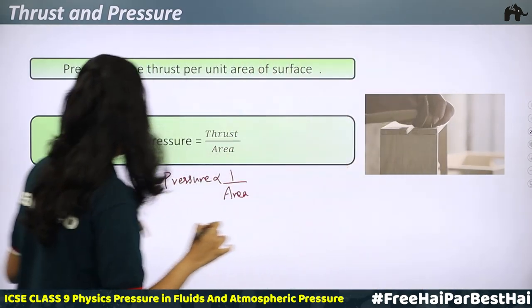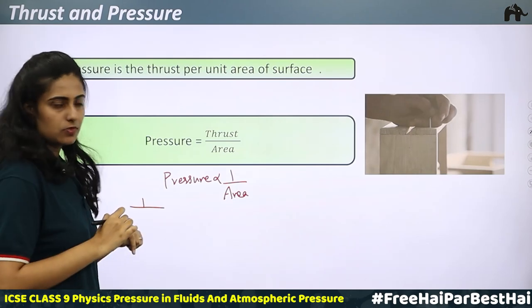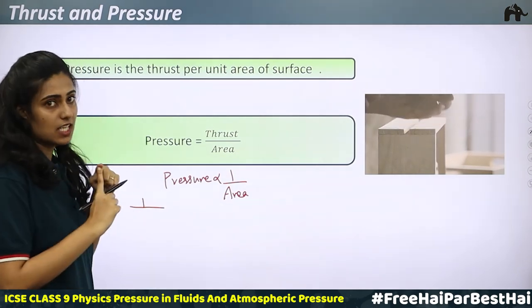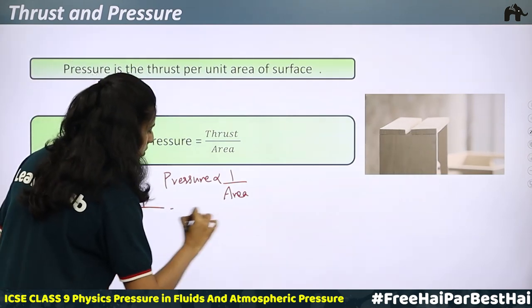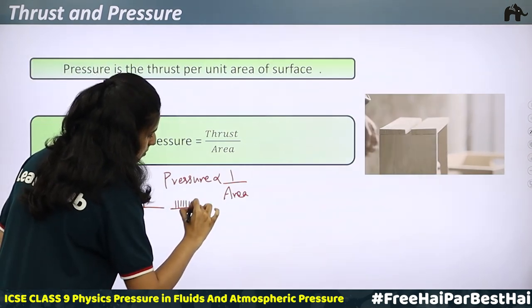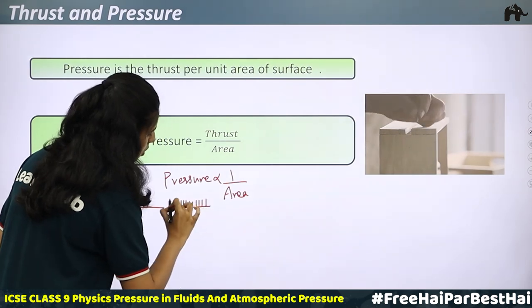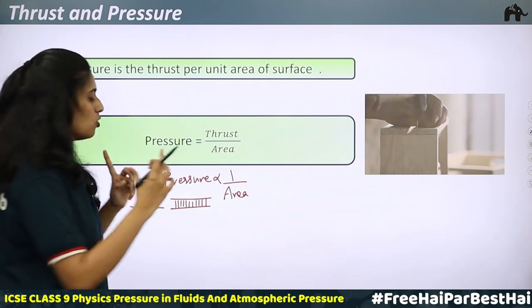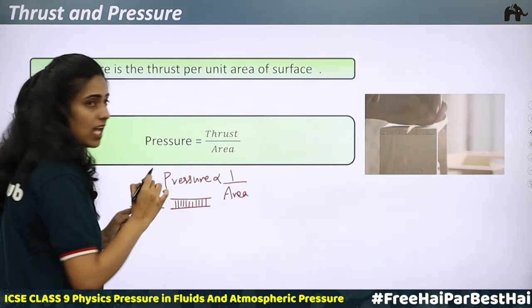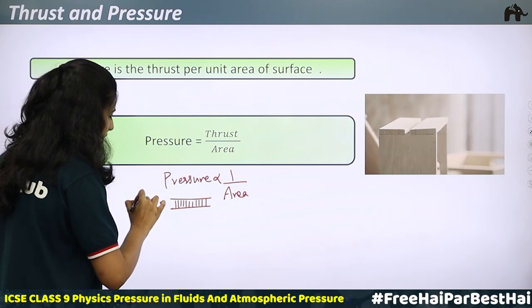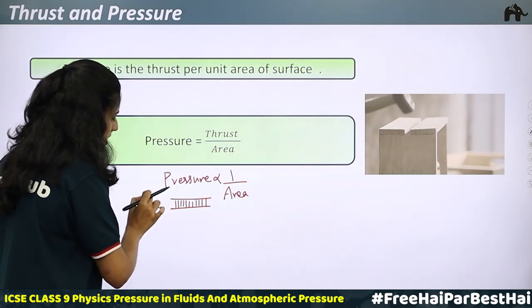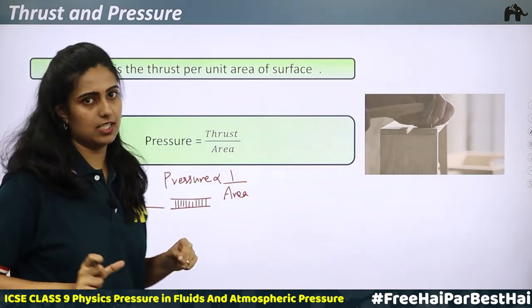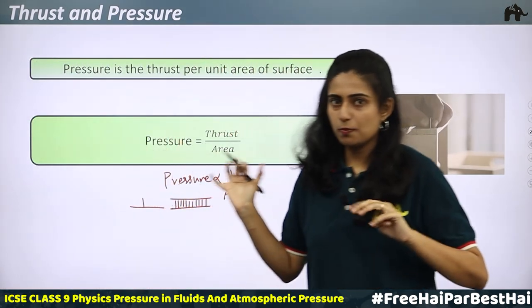Another example: if you keep a single nail fixed on a table and place your finger on it, you experience pain. But if you place many similar nails and put your finger over them, you won't feel pain. The thrust is the same, but the area increases across many nails, so pressure decreases. This shows pressure is inversely proportional to area.